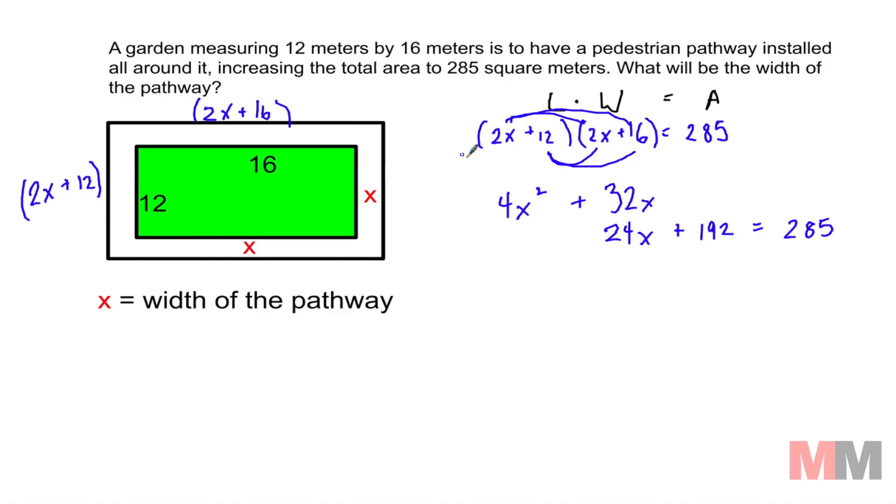Let's clean that up a little bit so we have a trinomial. 4x squared. These I just combine like terms and that's why I like to write them up and down because it's easier to add. So that's 6 and that's 5. 56x plus 192 equals 285.